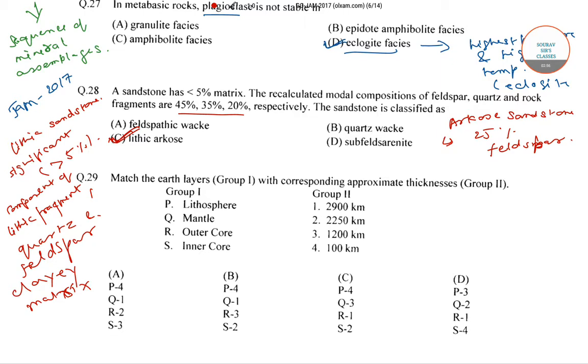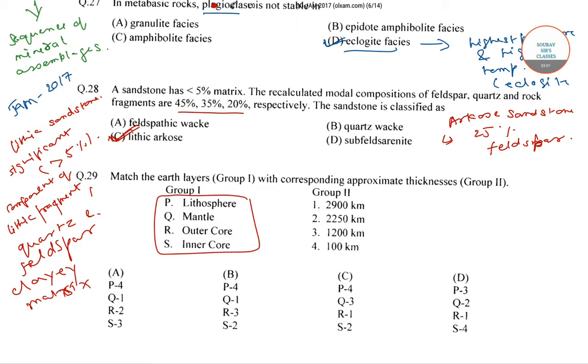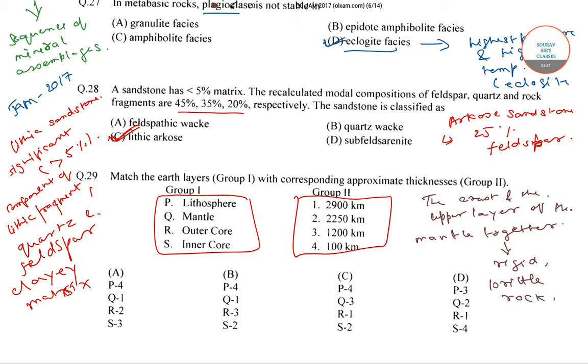Now we will move to the next question, that is match the earth layers. These are the earth layers and we have to match them with their corresponding thickness. The crust and the upper layer of the mantle together make up a zone of rigid, brittle rock called lithosphere. The corresponding thickness of lithosphere is 100 km, so it is P and 4.